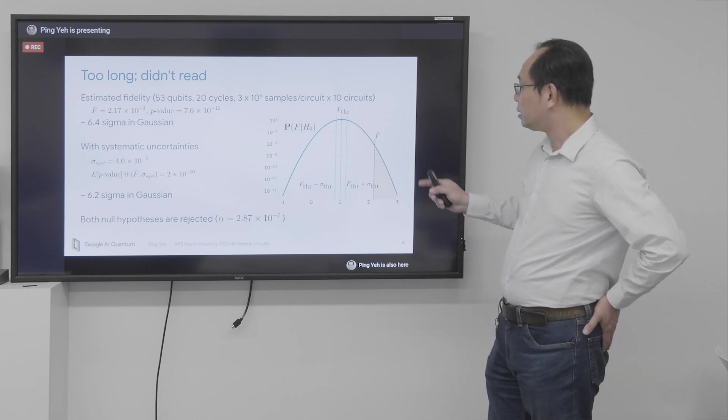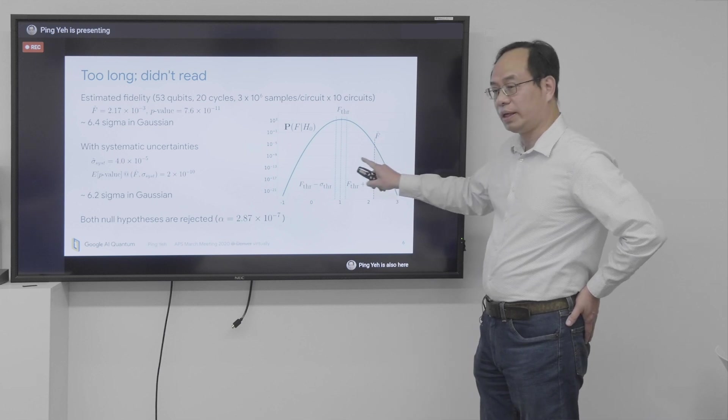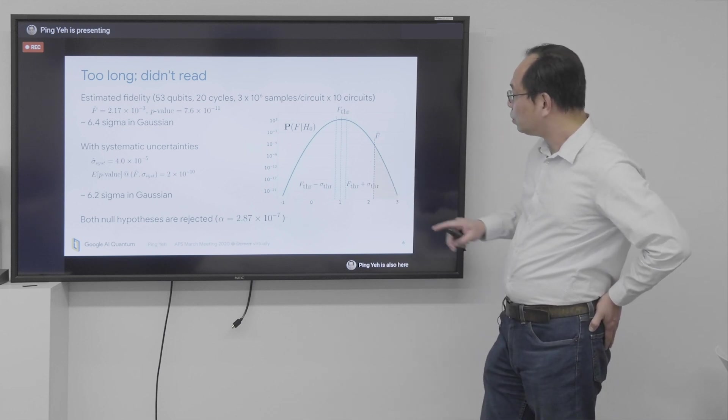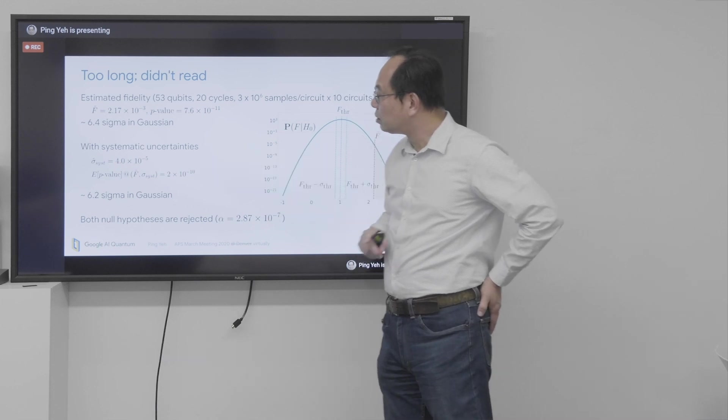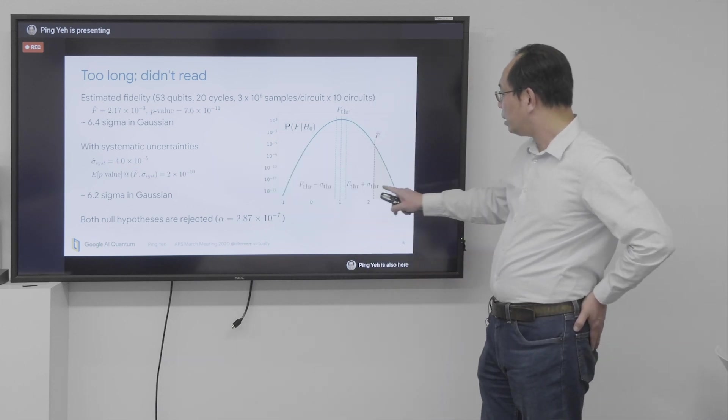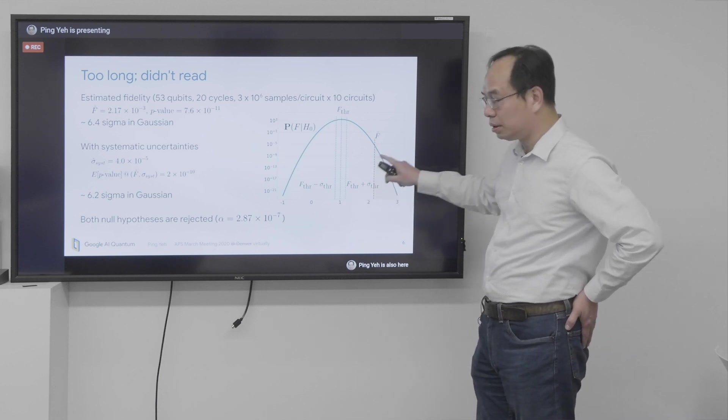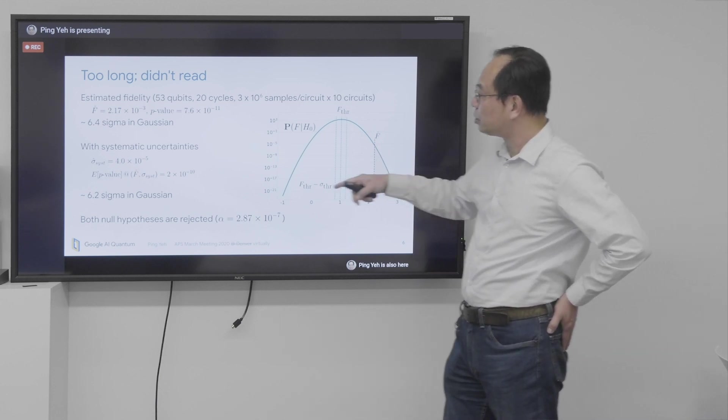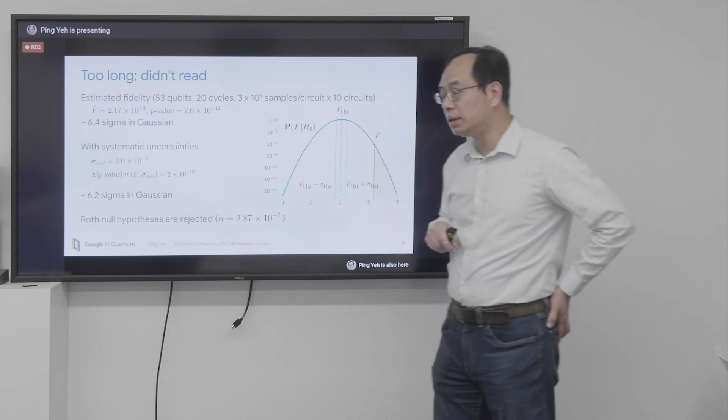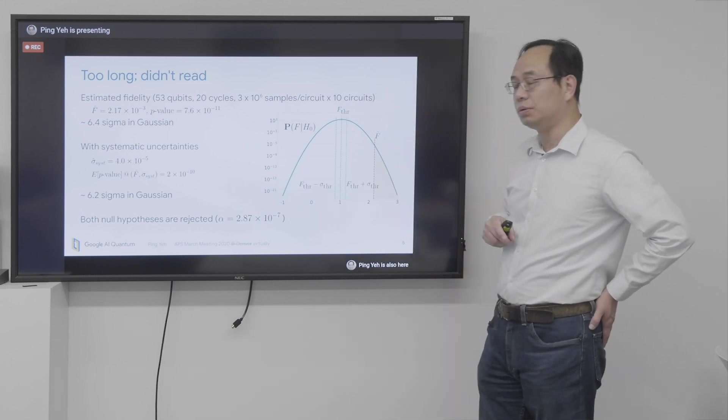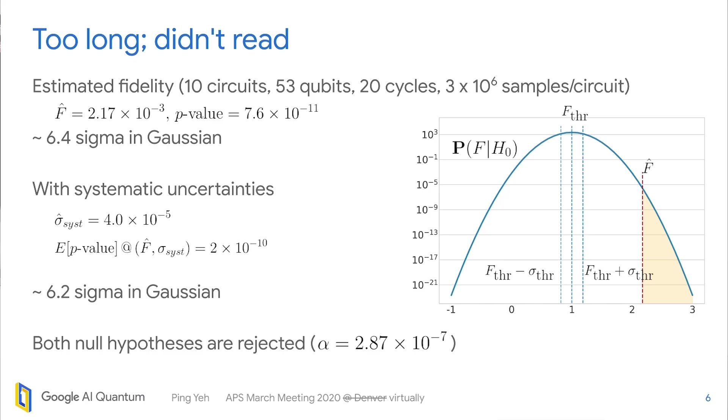And, of course, there's a systematic uncertainty on the value of F hat. So there's an uncertainty here. So we estimated the uncertainty to be 4 times 10 to the minus 5. And the p-value with that distribution here of F hat is estimated to be 2 times 10 to the minus 10, which corresponds to about 6.2 sigma in Gaussian. So, again, both null hypotheses are rejected. So if you are interested in knowing how we come up with those numbers and this function, let's continue.